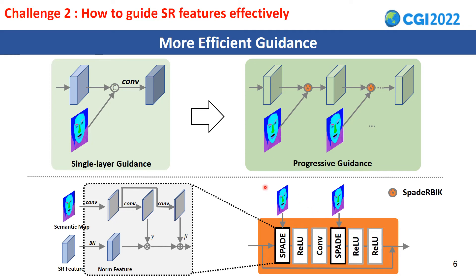How to get the super-resolution features effectively? We design a progressive guidance network. Since different layers in the guidance network have different characteristics, different layers should be guided adaptively. Motivated by the success of SPADE in image synthesis, we employ the SPADE residual block as a unit to adaptively gather super-resolution features. The detailed SPADE residual block model is shown below.